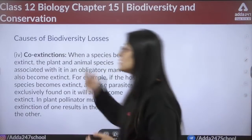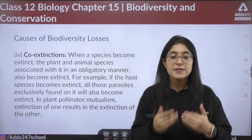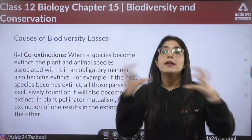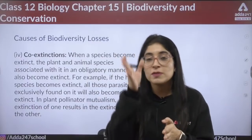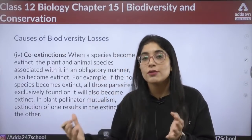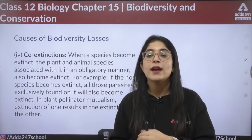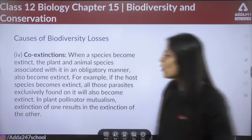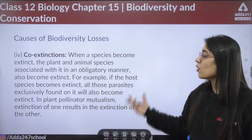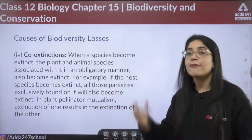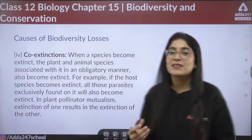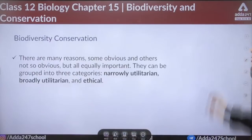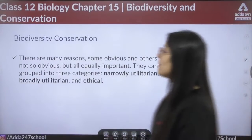Co-extinction occurs when a species becomes extinct and another species that is fully dependent on it also becomes extinct. For example, if a plant species goes extinct, the animal dependent on it will ultimately become extinct too. Similarly, if a host species becomes extinct, all the parasites found exclusively on it will also become extinct, as they are entirely dependent on their host.